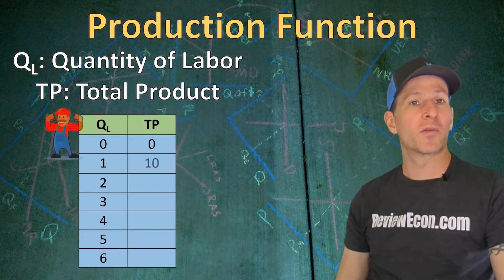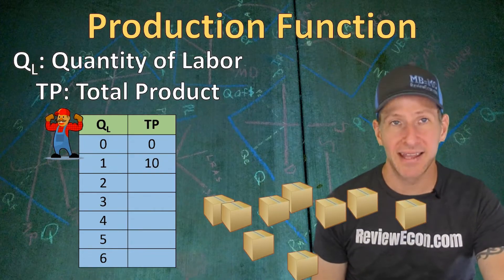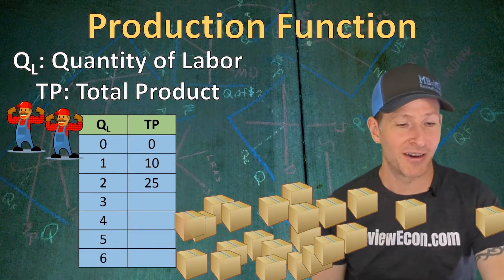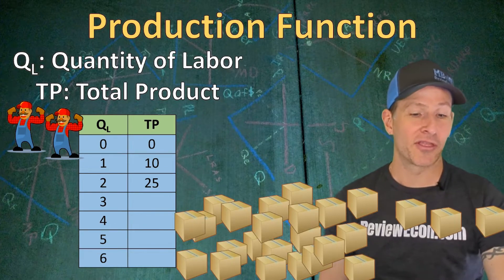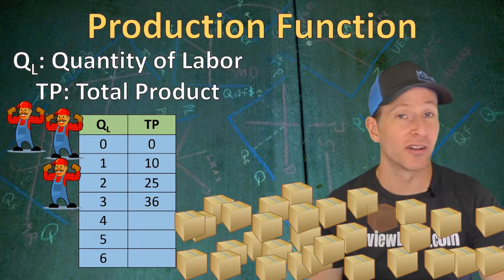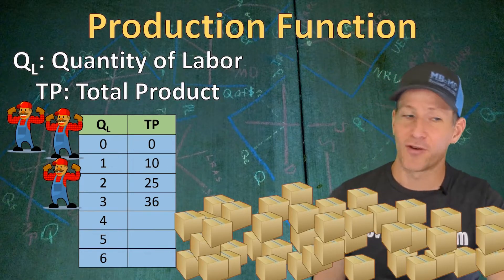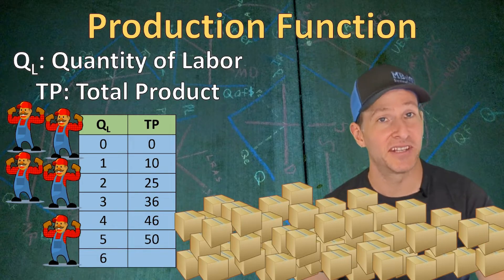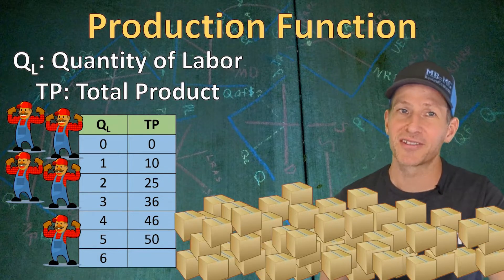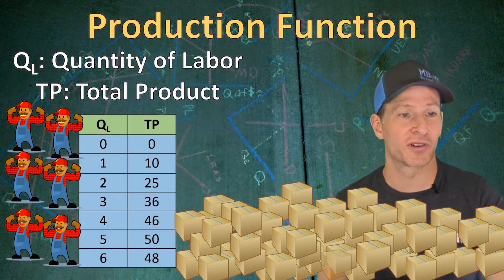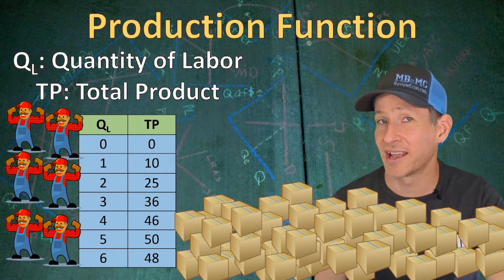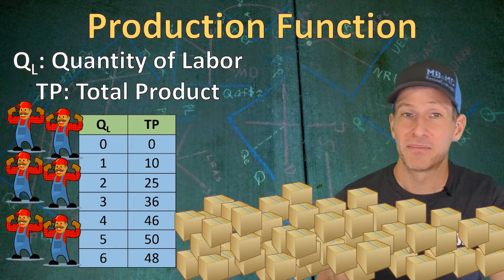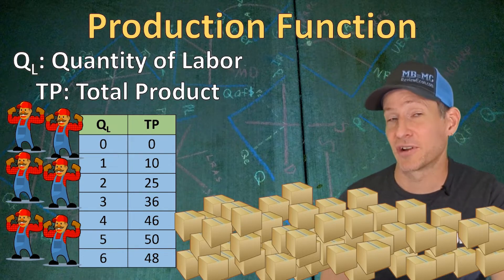If this firm hires one worker, it is going to produce 10 units of output. Hiring a second worker will give us a total of 25 units of output. A third worker gives us 36 units, a fourth worker gives us 46 units, and a fifth worker gives us 50 units of output. But if this firm hires a sixth worker, we are going to reduce production, bringing us down to 48 units of output. This production function is fictitious but helps us understand what a production function is.